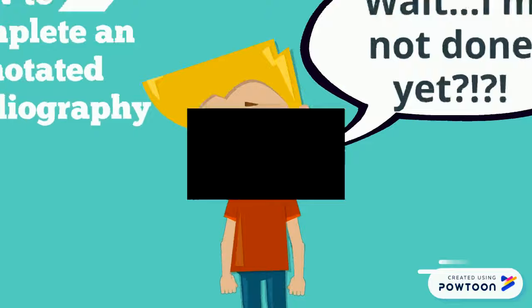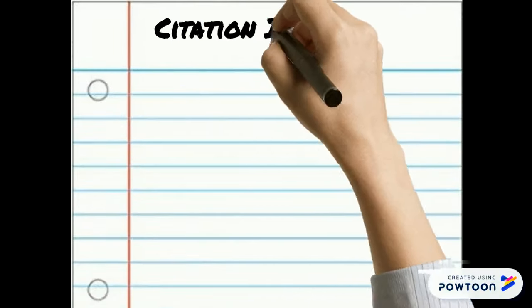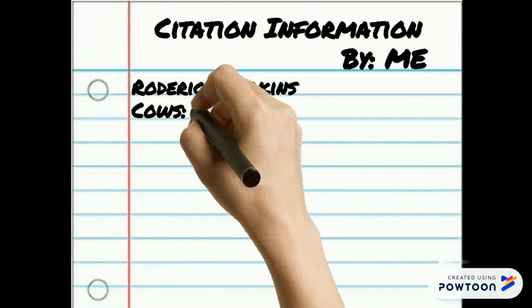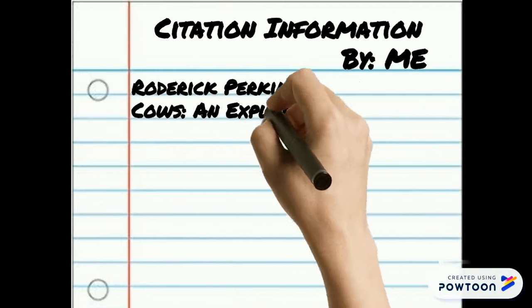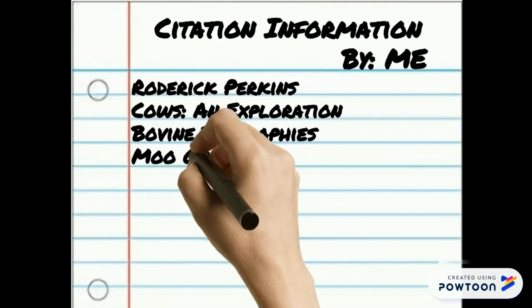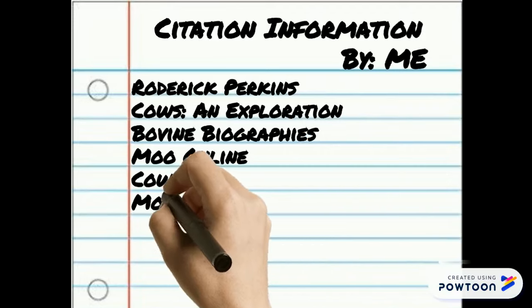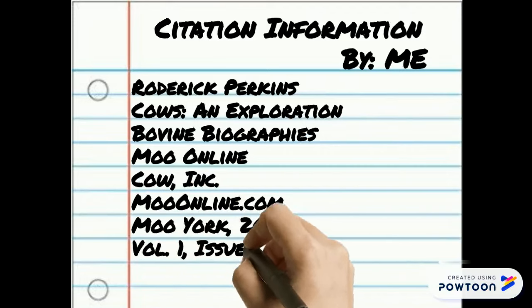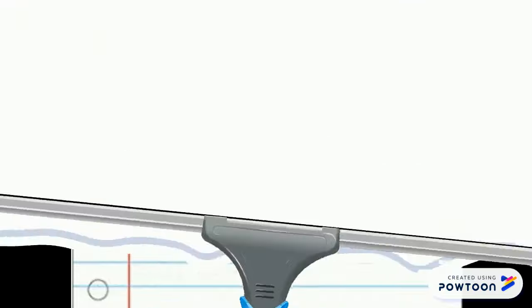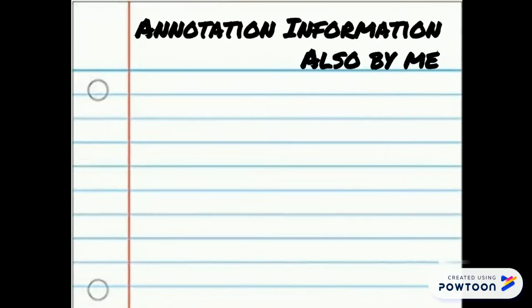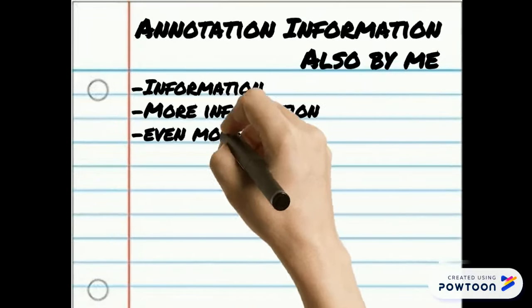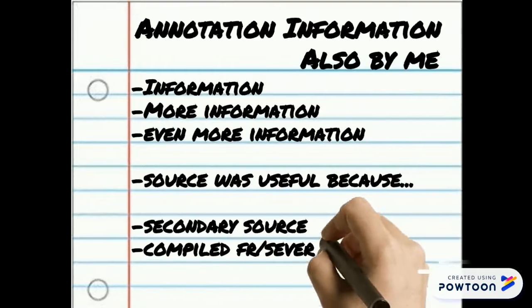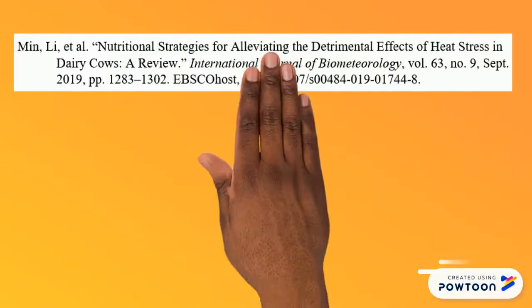Now that you know what an annotated bibliography is, let's talk about how to complete one. It starts with recording citation information from your sources while you are actually doing the research. This includes things like author name, article title, book title, website title, publisher, URL, date, and city of publication, volume or issue numbers, and the date you accessed the source. It's also a good idea to record annotation information as well. Recording these things while you do the research will save you a lot of work later on.